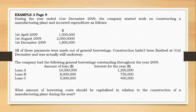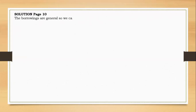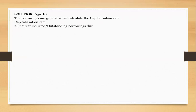The first step is to determine whether the borrowings are general or specific. The borrowings are general, so we need to determine the capitalization rate. The capitalization rate equals the interest incurred during the year over the outstanding borrowing during the year, and we are given that already. You can multiply by 100% to get the rate.